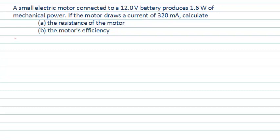To start our solution, let's make sure we can interpret what the question is actually asking. So we have a small motor and we know that there is a potential difference across that motor from a battery of 12 volts. We also know that 12 volts is causing a current of 320 milliamps to flow through the motor. And we also know something about the power produced, but this is mechanical power.